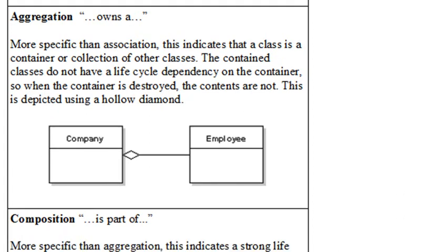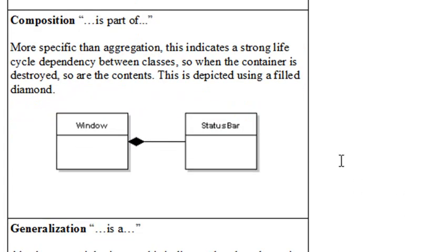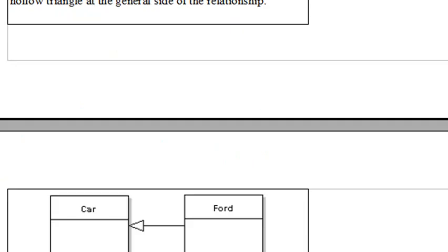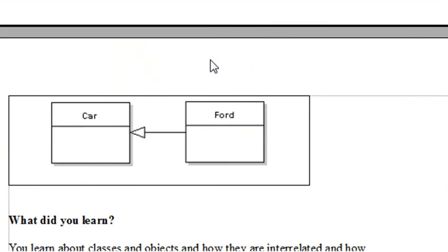Even stronger than aggregation is composition. Composition means it's a part of classes. So more specific than aggregation, this indicates a strong lifecycle dependency. So when the container is destroyed, so are all the other containers. Finally, we discussed generalization, which basically is inheritance. And you can see right here, the class Ford can be derived or inherits from the class car. And so that's a summary of relationships.